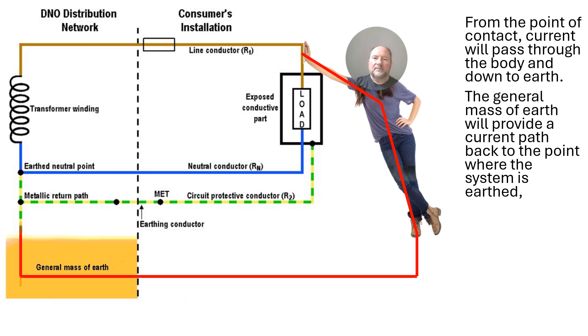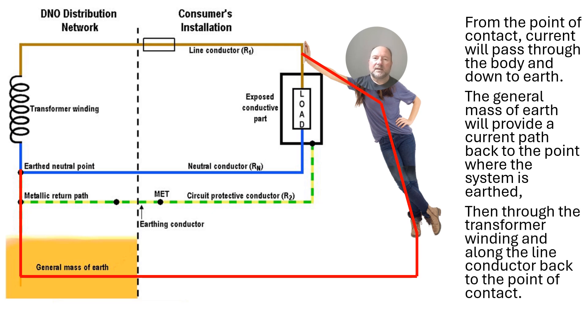And it will find its way through the general mass of Earth and find its way eventually back to that Earth neutral point of the transformer secondary winding in the DNO substation. The current will then pass through the secondary winding and down the line conductor back to the point of contact. So that is the whole path that the current will take.